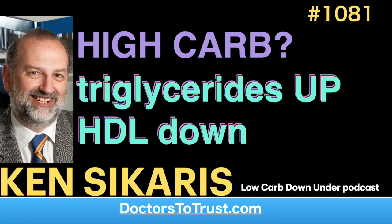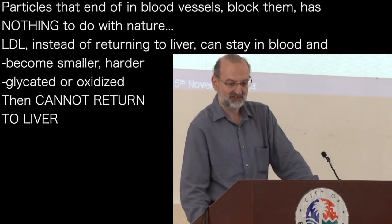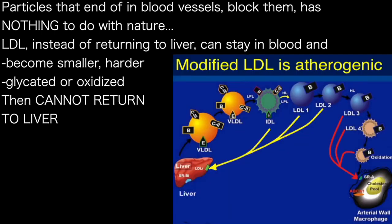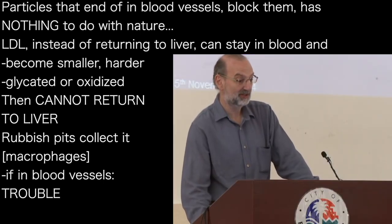So what is this particle that's full of cholesterol that ends up in blood vessels and blocks them? It's got nothing to do with nature. What can happen to LDL is rather than going back to the liver, it can stay in the blood and change its character — change to be smaller and harder, or be glycated or oxidised. And once LDL changes, the liver wants nothing to do with it. It tells the rubbish pits of the body to get rid of it. And if those rubbish pits happen to be anywhere near your blood vessels, that's a disaster.